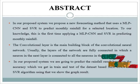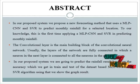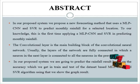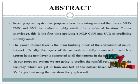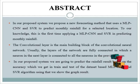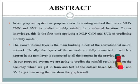To our knowledge, this is the first time applying a multi-layer perceptron convolutional neural network and support vector regression in predicting monthly rainfall. The convolutional layer is the main building block of the CNN; usually layers are fully connected, where a neuron in the next layer is connected to all neurons in the previous layer. In our proposed system, we predict rainfall results based on the accuracy obtained in train and test splits, using the MLPCNN and SVR algorithms, and display graph results.